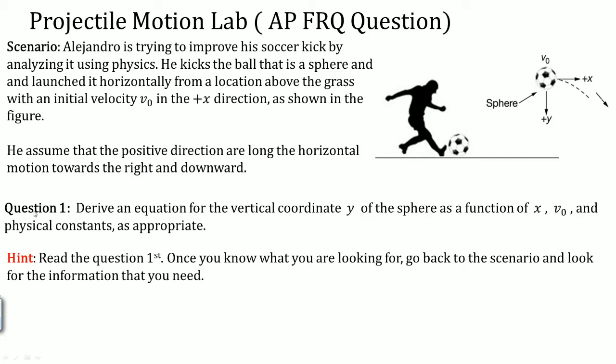Question 1 says to derive an equation using the vertical coordinate y of the sphere as a function of x, velocity naught, and the physical constant as appropriate. The physical constant they're referring to is gravity, which is g, always constant at 9.8.